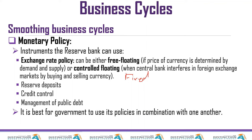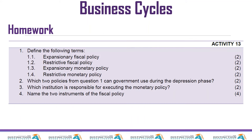Other instruments include reserved deposits, credit control, and management of public debt. It is best for government to use its policies in combination with one another — referring to the fiscal and the monetary policy.